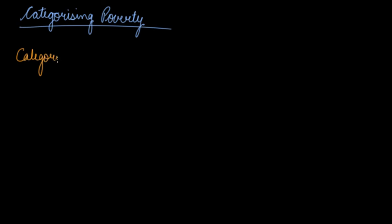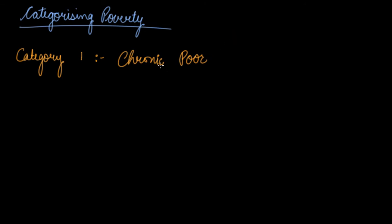Now, how do we categorize poverty? Category 1 is the chronic poor — those who are always poor and usually poor, like landless workers, casual workers, and rickshaw pullers. These are chronic poor; they are poor and they will always be poor.